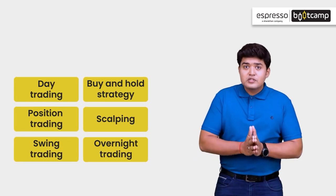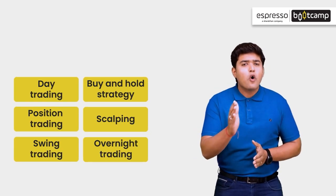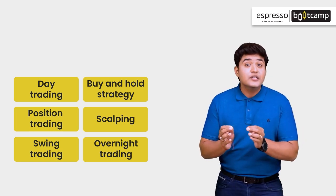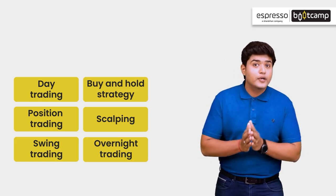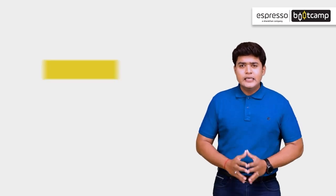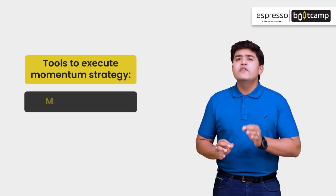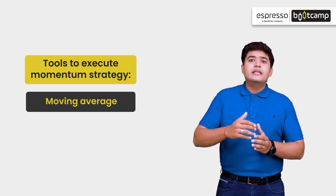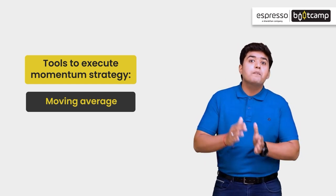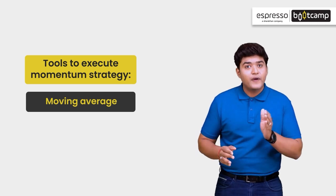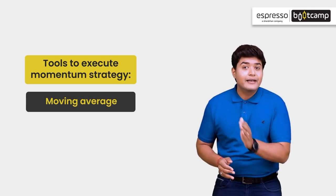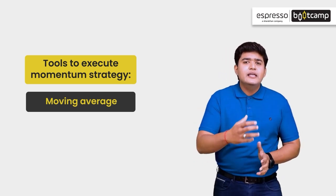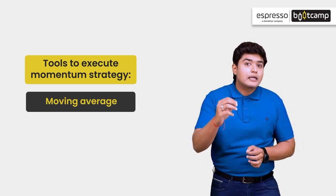Traders rely on several tools to help them spot trading opportunities. Chalye in mein se kuch tools ke baare mein jaan lete hai jo momentum strategy par based trades ko identify karne mein help kerte hai. Sabse pahle aati hai moving averages. Iski help se aap kisibhi stock ko kis direction mein woh jane wala hai woh pata kar sakte ho. Aapko 5, 20, 50, 100, ya 200 days ka moving average nikalana hai aur dekhna hai ki stock in ke upar trade kar raha hai ya nahi.